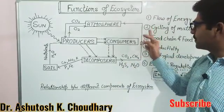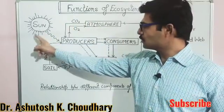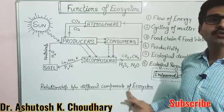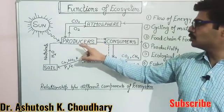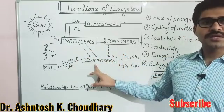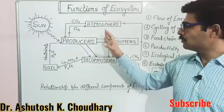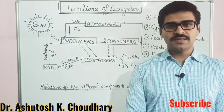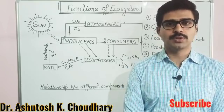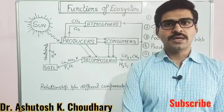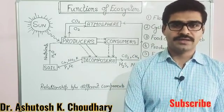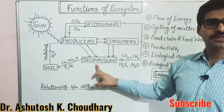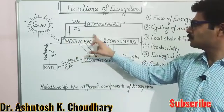Before discussing the functions of ecosystem, I will explain you this flow chart. This flow chart shows you the relationship between different components of ecosystem — how they are interconnected. As we know, in ecosystem two types of components are there. First is biotic components — biotic means living components. Second type are abiotic components — abiotic means non-living components. Here in this flow chart, producers, consumers and decomposers are all living components of the ecosystem.